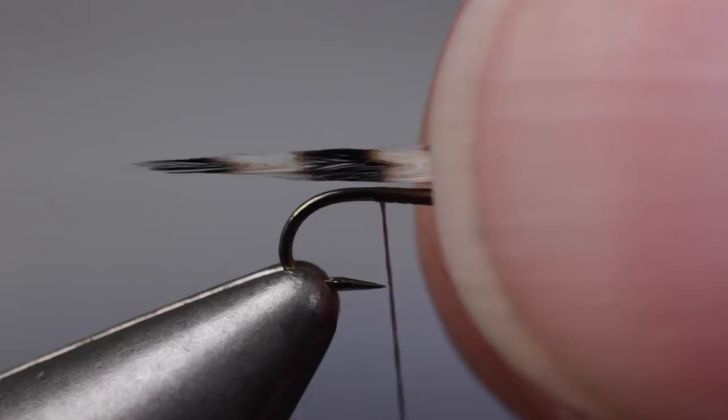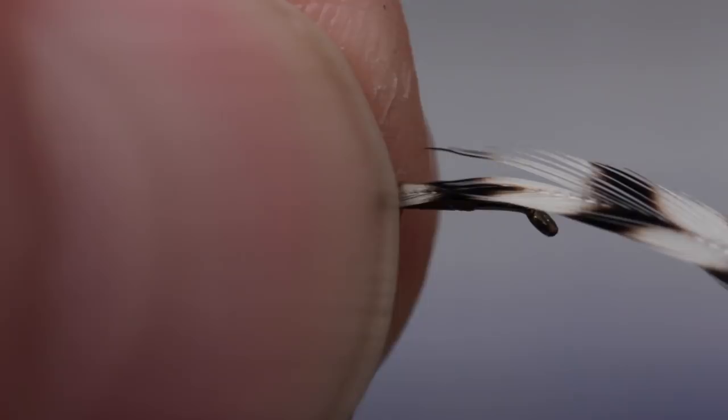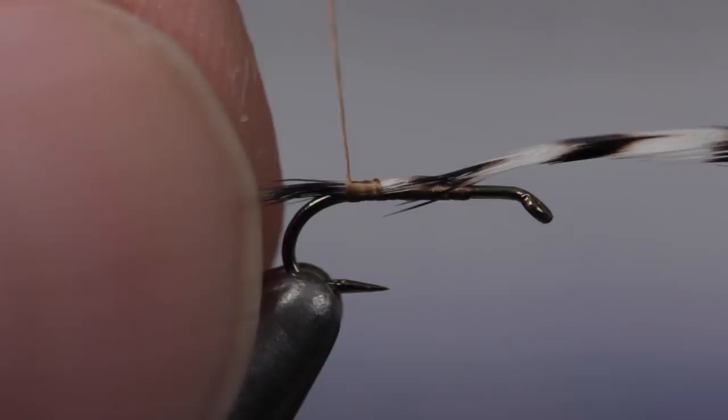Lay the hackle on top of the hook so its tip extends about a hook shank length behind the bend. Take thread wraps to secure it while keeping it positioned on top of the shank. Leave your thread at about the halfway point on the shank and while lifting the butt end of the feather up, snip it off close.